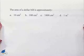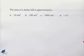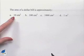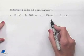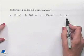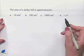Now let's see if we can approximate the following area. The area of a dollar bill is approximately - and we have four choices: 10 square centimeters, 100 square centimeters, 1,000 square centimeters, or 1 square meter. Well, we can